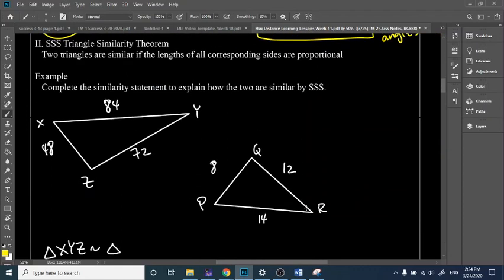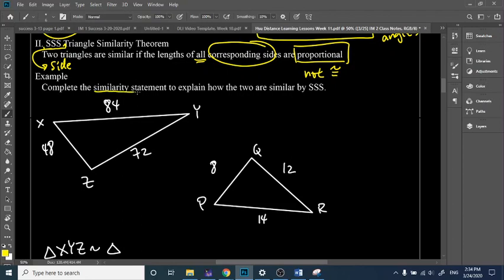Moving on. SSS triangle similarity. So, you're going to be seeing S and A a lot. This stands for side. So, S is side, A is angle. Two triangles are similar if the lengths of all corresponding sides are proportional. Notice this is not congruent. They don't have to be congruent in order for triangles to be similar. I mean, technically, if they are congruent, then they are also considered similar. But, we don't need that, necessarily. So, let's complete the similarity statement to explain how the two are similar by SSS.